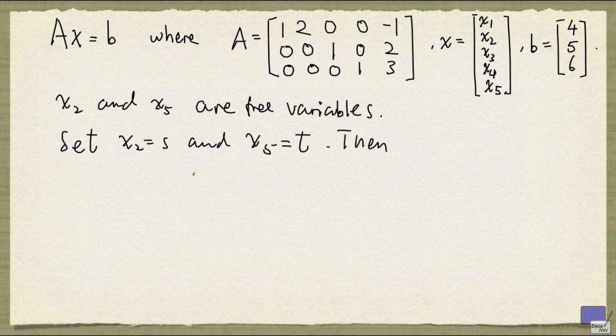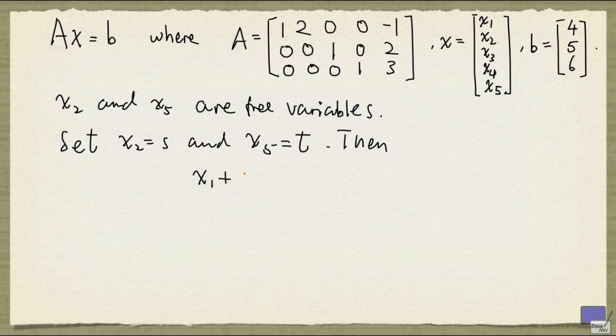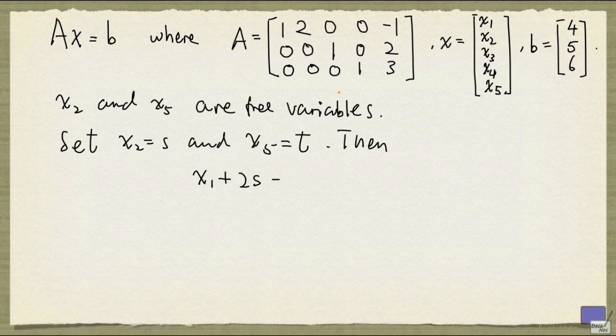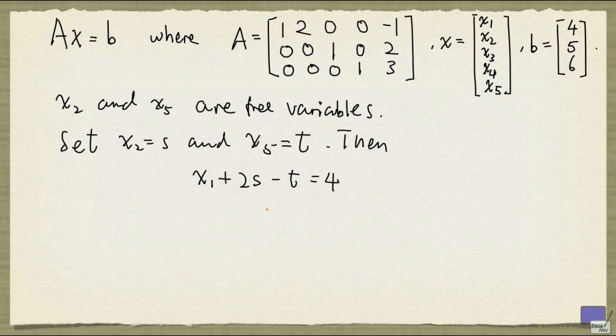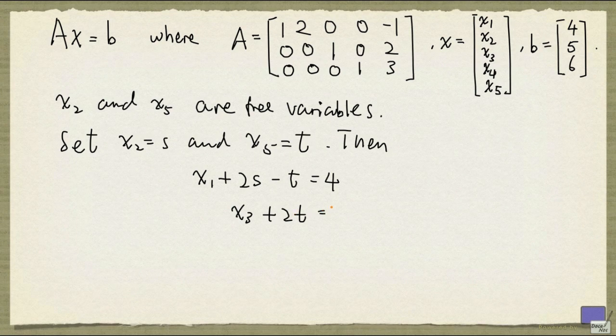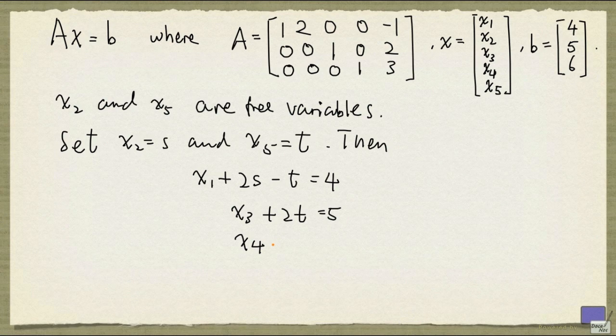Then the system reduces to the following. So 2 times x2 becomes 2 times s, and minus 1 times x5, that becomes minus t, and the right hand side is 4. For the second equation, we have x3 plus 2t equal to 5. And for the third equation, we get x4 plus 3t equal to 6.